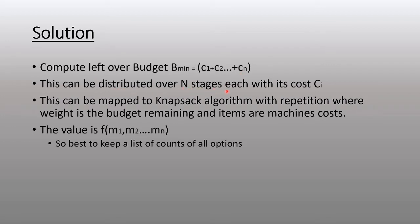This can be distributed over n stages. The overall solution looks like a knapsack solution with repetition, because we can compute the remaining budget, which is B minus Bmin. That's the budget beyond the minimum required system. Now we can distribute that budget over n machines and see how many of each machine's copies do we need.